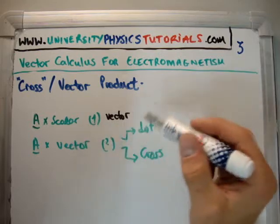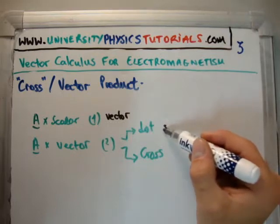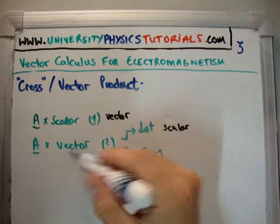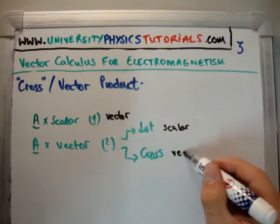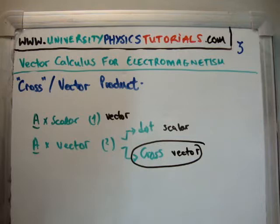If you take the dot product with a vector, you're going to get back a scalar, and I did that in the last video. And if you multiply it by another vector, taking the cross product, you're going to get back a vector. So we're talking about the cross product, that means we're going to get back a vector. So it has components i, j, and k, for example.